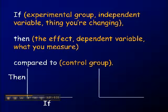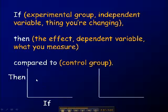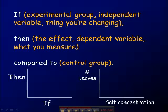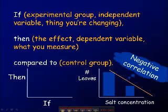To summarize, here's the structure of the hypothesis, and notice it relates to the graph. The word 'if' — that's the experimental group or independent variable, in this case salt concentration — goes on the x-axis of your graph. The number of leaves, which comes after the word 'then' as the dependent variable, goes on the y-axis. So your independent variable is on the x-axis and your dependent variable is on the y-axis. Hopefully you'll see some results — in this case it's showing a negative correlation.